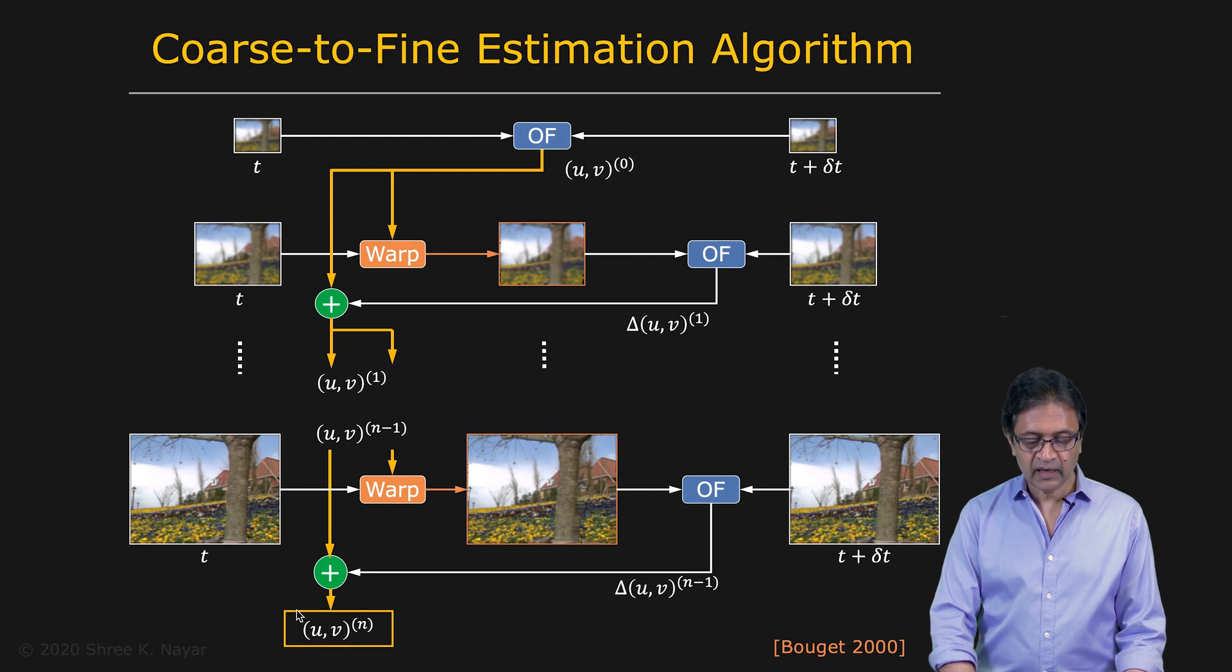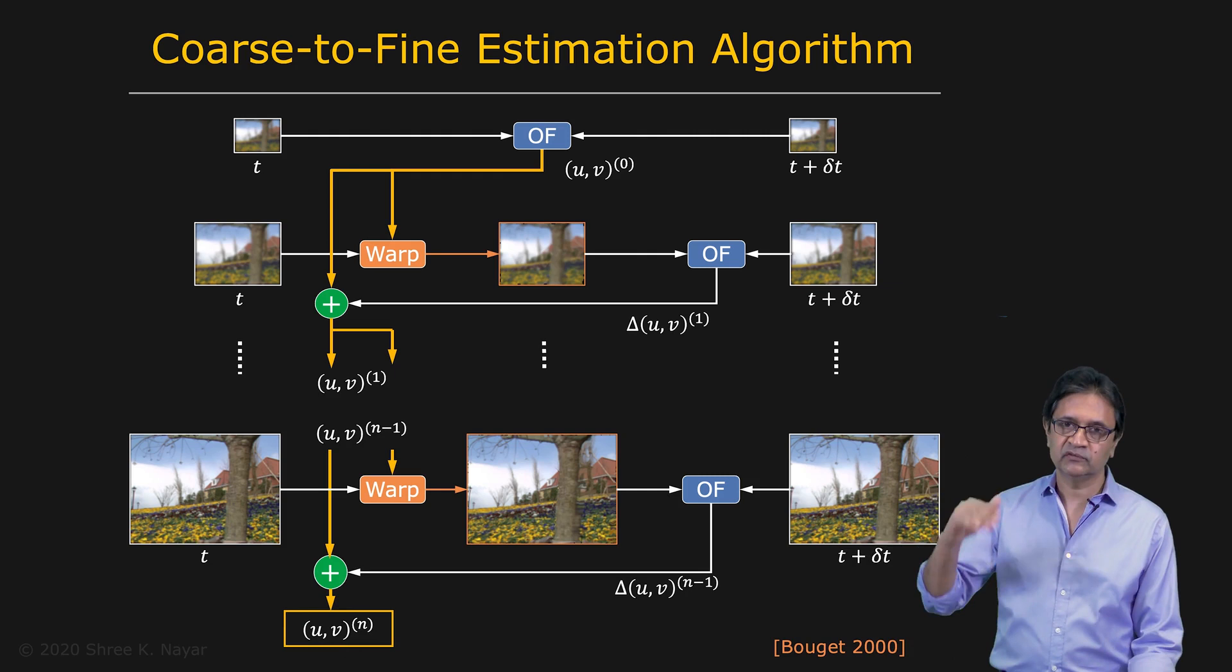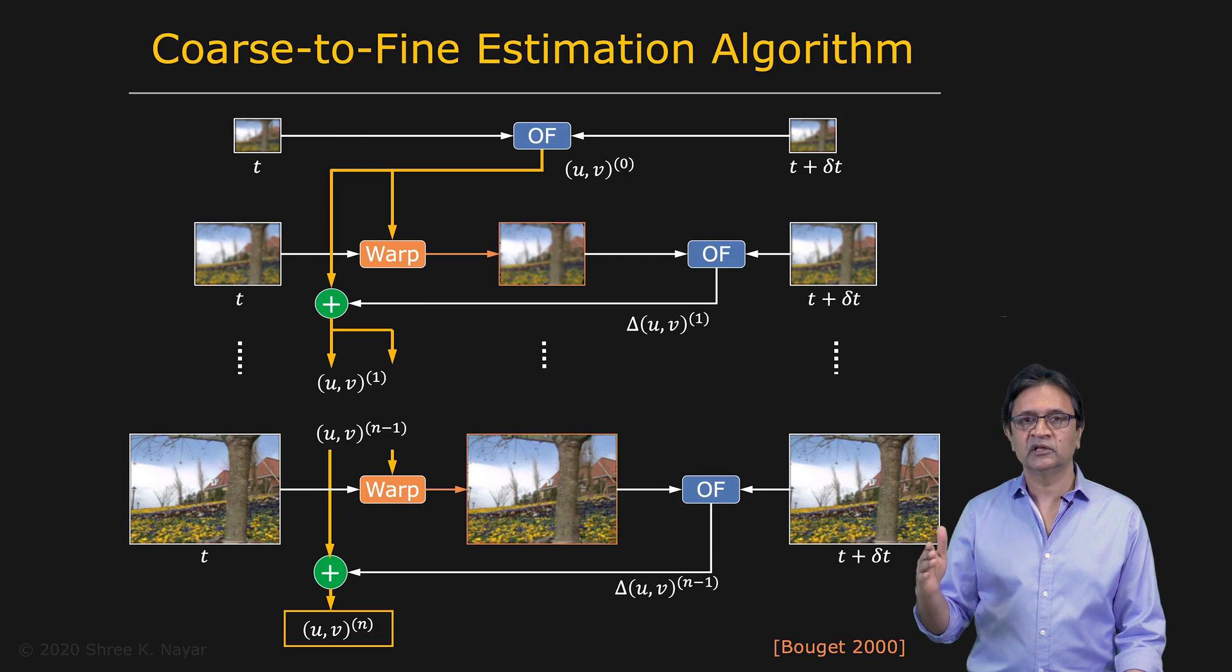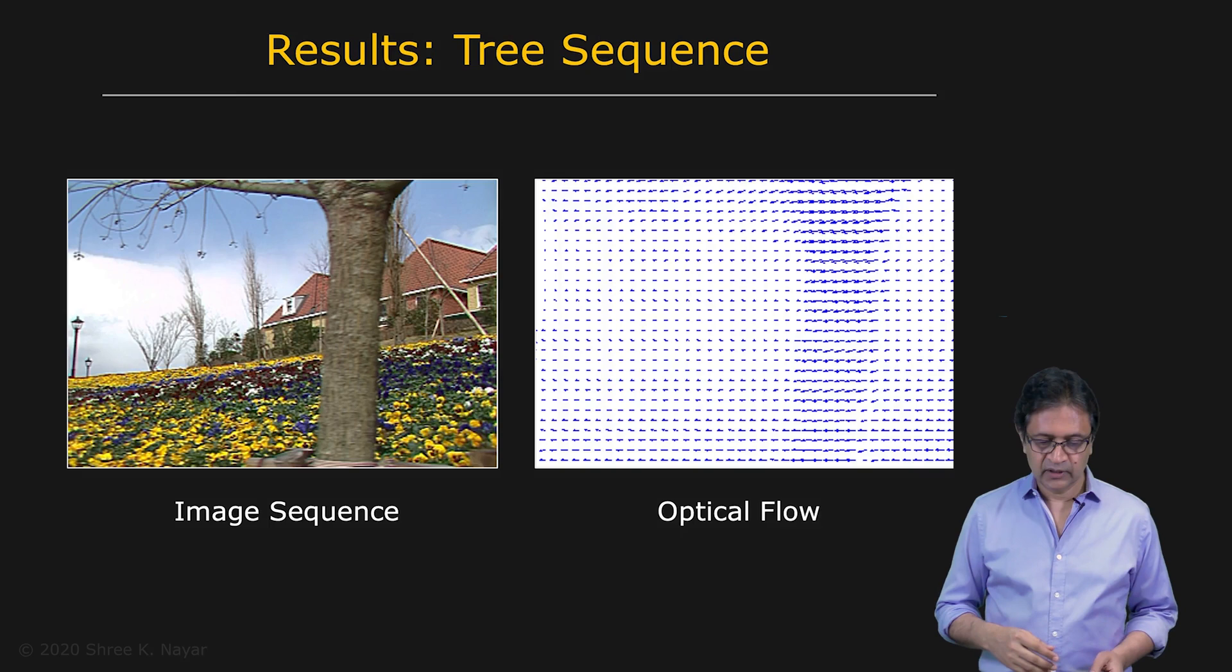And you keep going till you finally arrive at the highest resolution images. And that gives you the final flow at every pixel in the image. This method works really well because you're propagating this information from lower resolutions to higher resolutions, while always ensuring that the optical flow constraint equation remains valid.